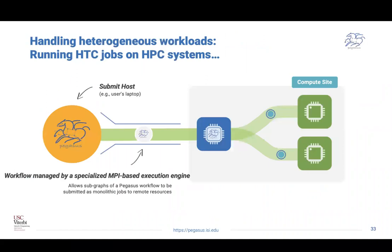We developed a specialized MPI-based execution engine: we carve out a piece of a workflow, attach an engine to it, and ship it all from the Pegasus submit host to the computational system. On that side, the workflow execution engine starts up as an MPI job and executes the workflow in a master-worker paradigm, giving out tasks to workers to execute the computations. This can also be used in conjunction with task clustering. As a result, from the HPC system's perspective it is a large MPI computation running post-processing single-core jobs on that resource.